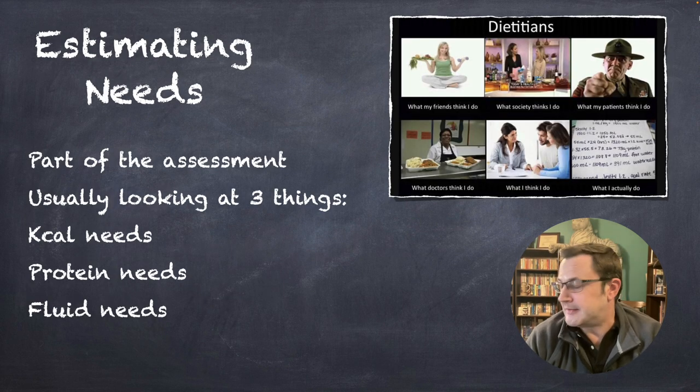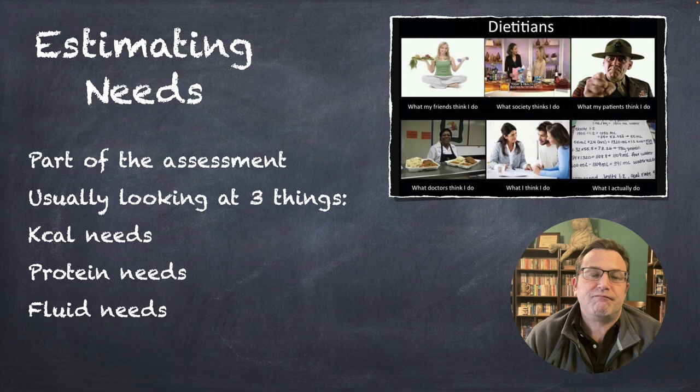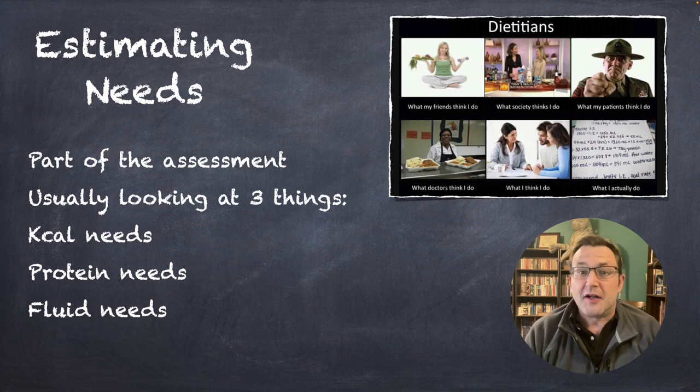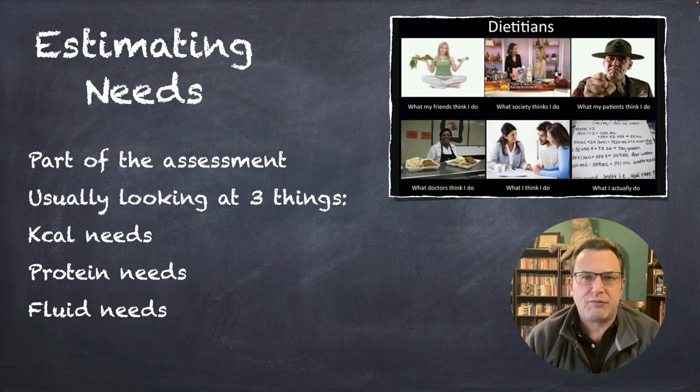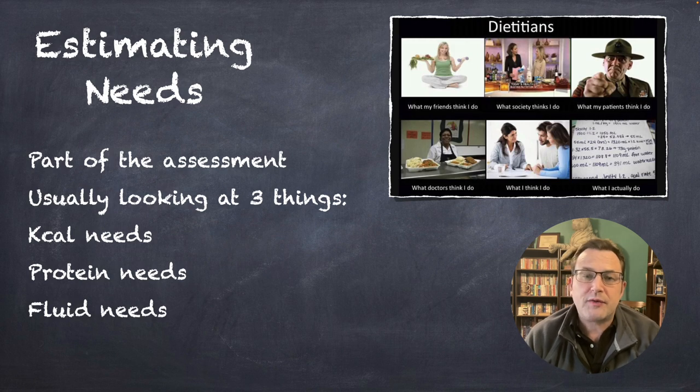So, estimating needs. This is part of the assessment. It's always part of the assessment. One of the things that they're bringing the dietician in for is to assess needs and see how much a person needs and how much they're taking in to compare them against each other. Usually, they're looking for three things: kilocalories, protein, and fluid.